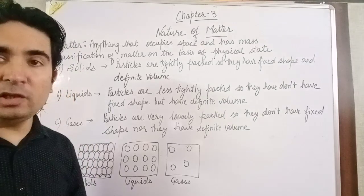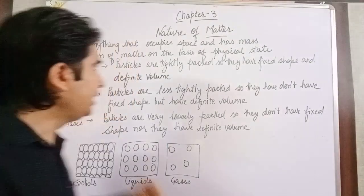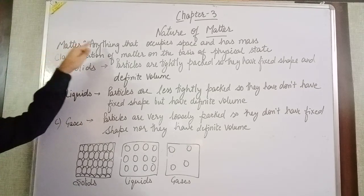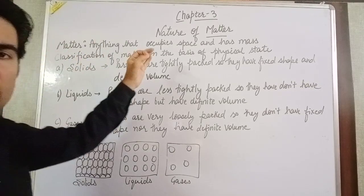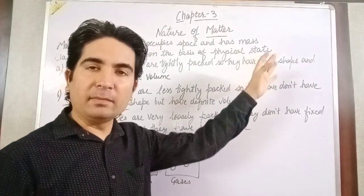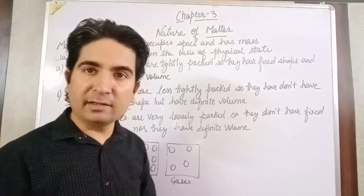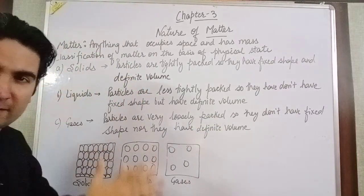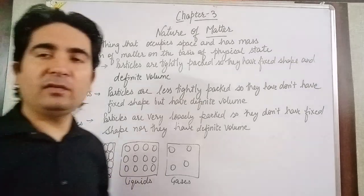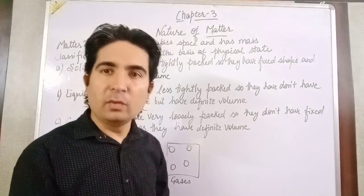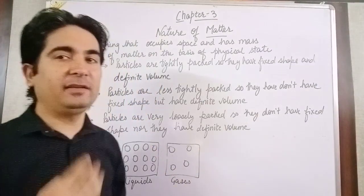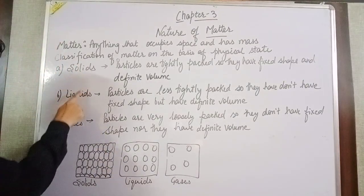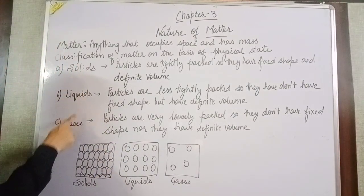In this video, what we have learnt is: matter is anything that occupies space and has mass. If we want to classify matter on the basis of their physical state, we classify matter into three different forms: solids, liquids, and gases.